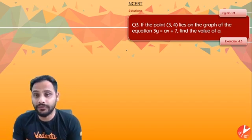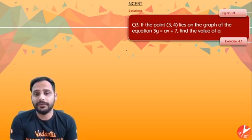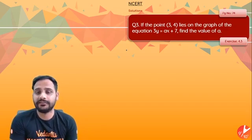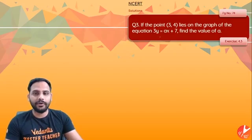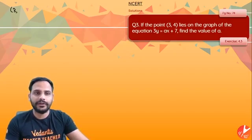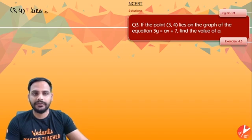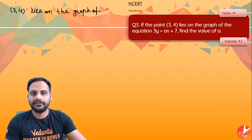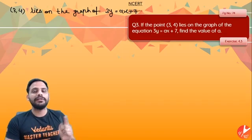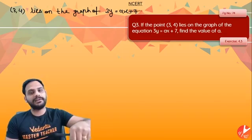Let's go for the next question. If the point 3 comma 4 lies on the graph of the equation 3y is equal to ax plus 7, find the value of a. Now, we know that this point 3 comma 4 lies on the graph of this line 3y is equal to ax plus 7.